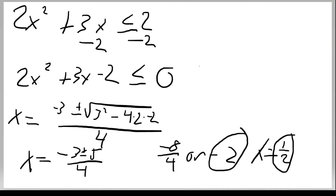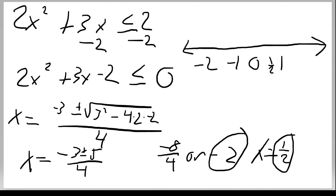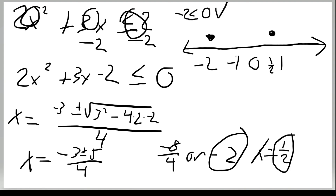We place x equals negative 2 and x equals one half on a number line. Since the inequality includes equal to, we use solid dots. Plugging in x equals 0 as a test: 2 times 0 squared plus 3 times 0 equals 0, and negative 2 is less than or equal to zero — that checks out. Since zero is between the two points and works, the solution is the interval between them: negative 2 is less than or equal to x is less than or equal to one half. Thanks for watching — see you in the next one.